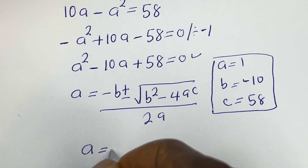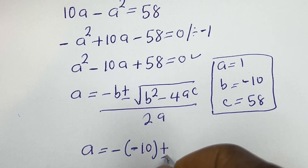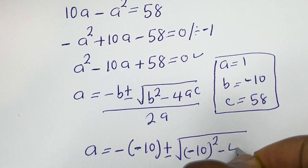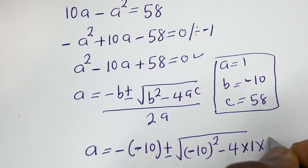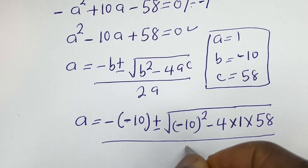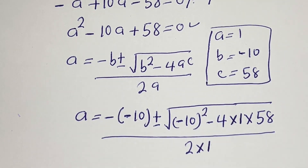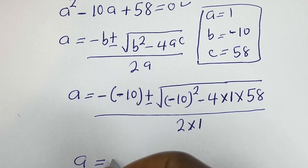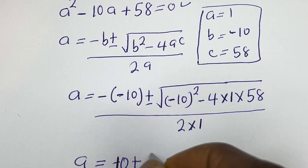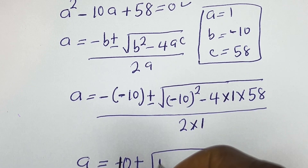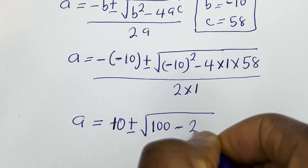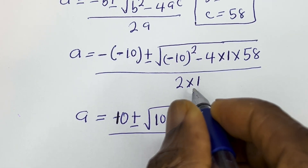Then a is equal to minus bracket minus 10, plus or minus square root of (minus 10) squared minus 4 multiplied by 1 multiplied by 58, all divided by 2 multiplied by 1. This simplifies to 10 plus or minus square root of 100 minus 232, all over 2. And 4 times 58 is 232.